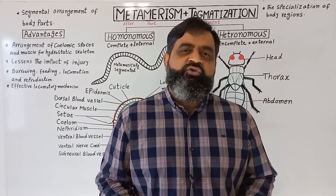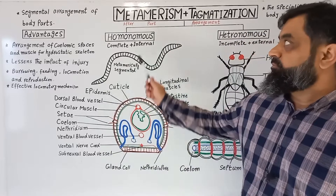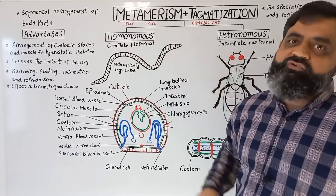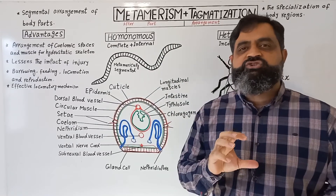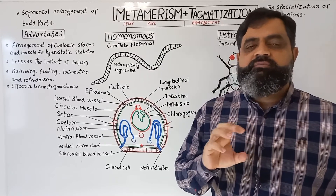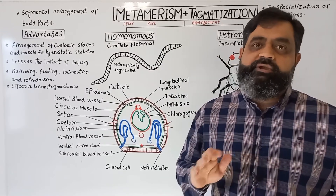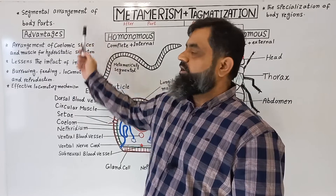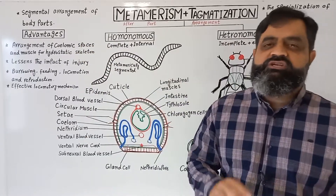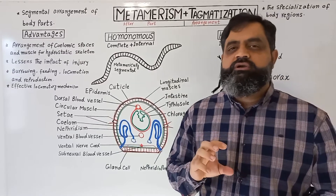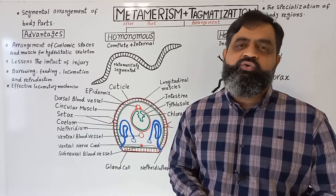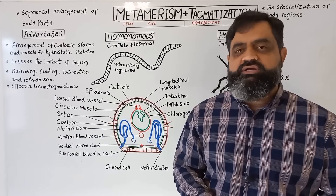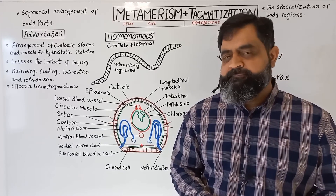Metamerism — if we look at the meaning of metamerism: meta means after, mer means part, and ism means phenomenon. It is a phenomenon in which different parts of an animal body are repeated. By definition, it is the segmental arrangement of body parts in which each body is divided into different segments repeatedly. Such an animal is known as metamerically segmented.